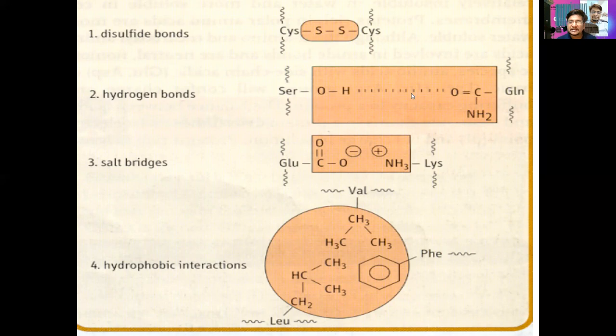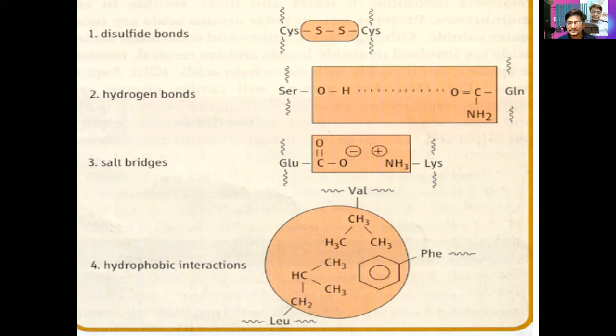Hydrogen bonds involve many amino acids — serine and glutamine are shown, but many others participate. Then there are salt bridges, which are ionic bonds formed from positive and negative charged termini. Finally, hydrophobic interactions are very important, including London dispersion forces and other hydrophobic interactions. These are weak forces, but in biological systems — and proteins are no exception — they play a very important role.